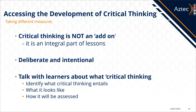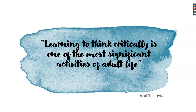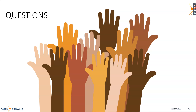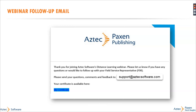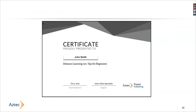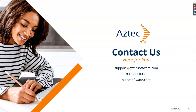To wrap things up: critical thinking is not an add-on. It really should be an integral part of your lessons. It needs to be deliberate and intentional — talk with your learners about what it entails, what it looks like, and how you're going to use it in the classroom. To leave you with this thought: learning to think critically is one of the most significant activities of adult life. You will receive a follow-up email. At the bottom left-hand corner in the blue box, click on 'My Certificate' and you will be given a certificate of attending today's webinar. Next week we're going to be doing communication skills — I hope all of you come and join us. Thank you so much for coming today.